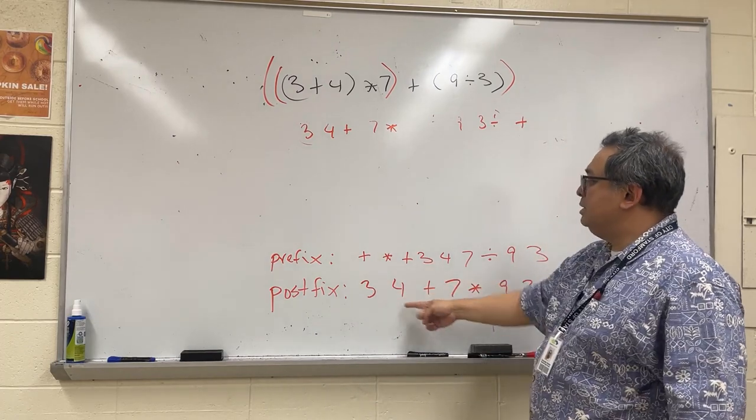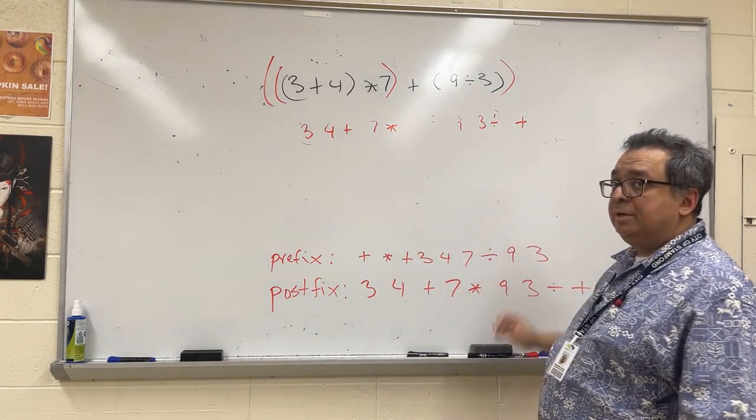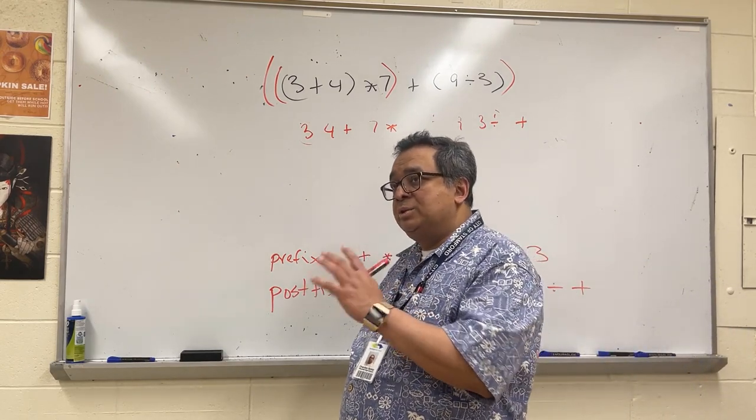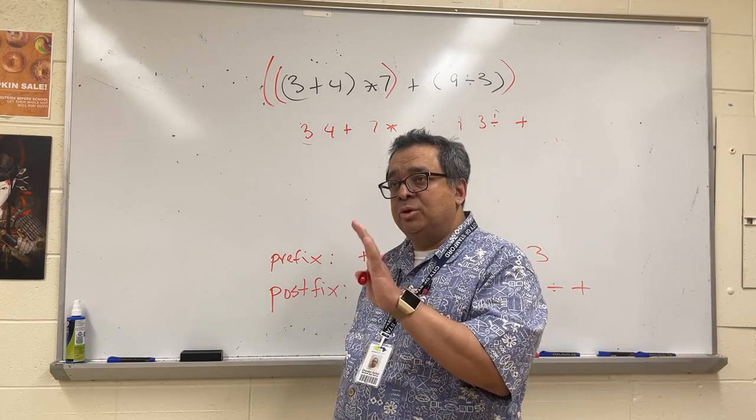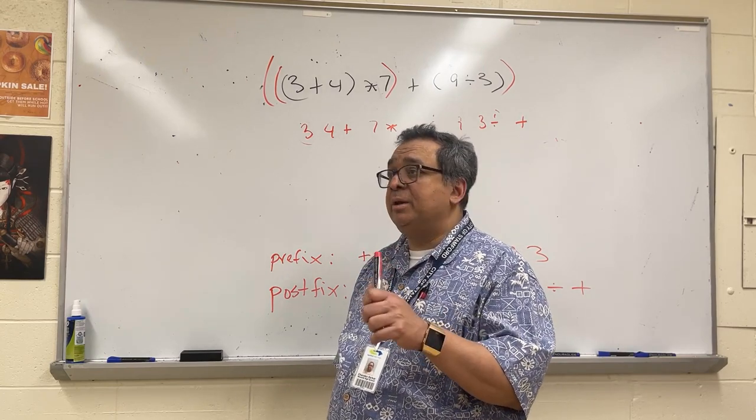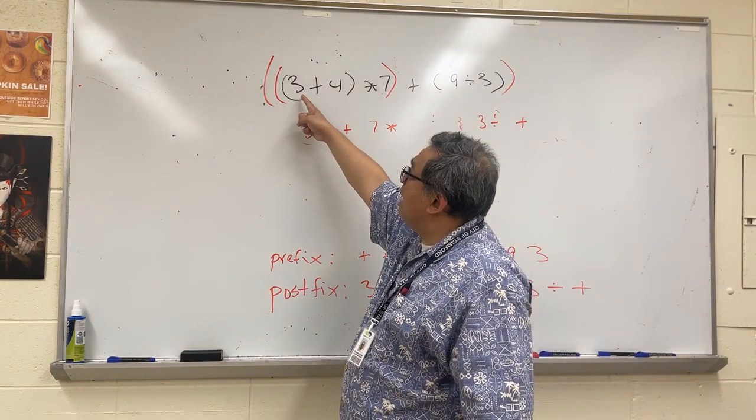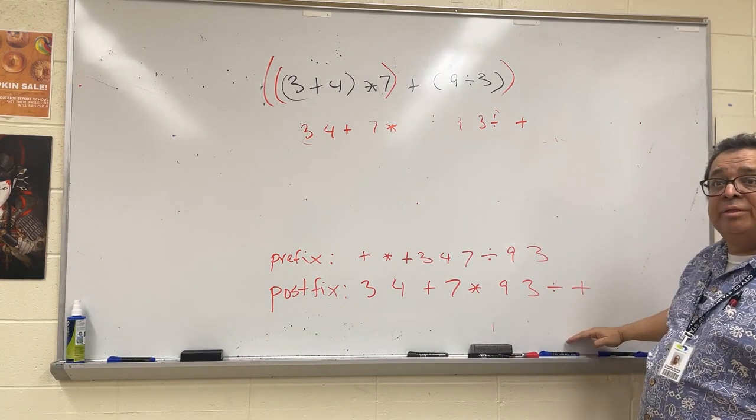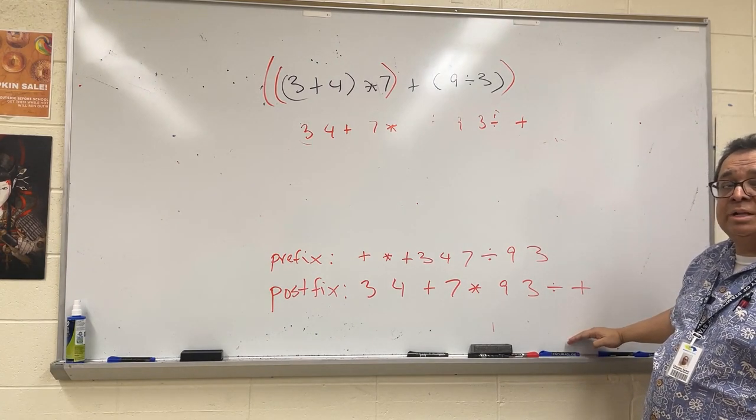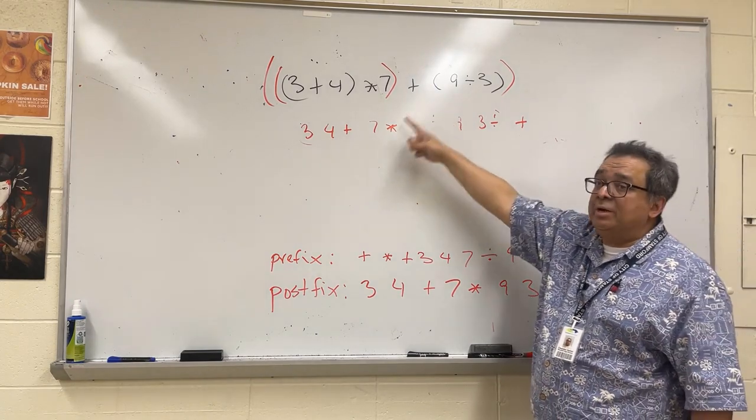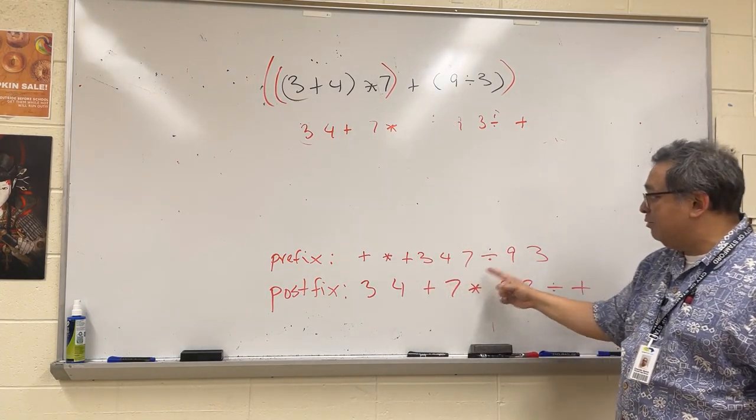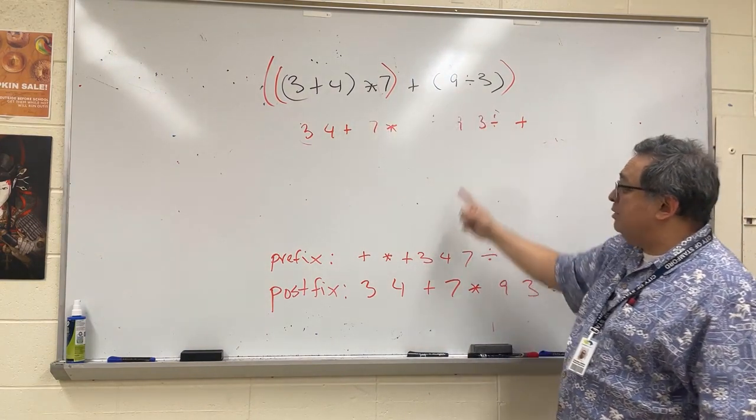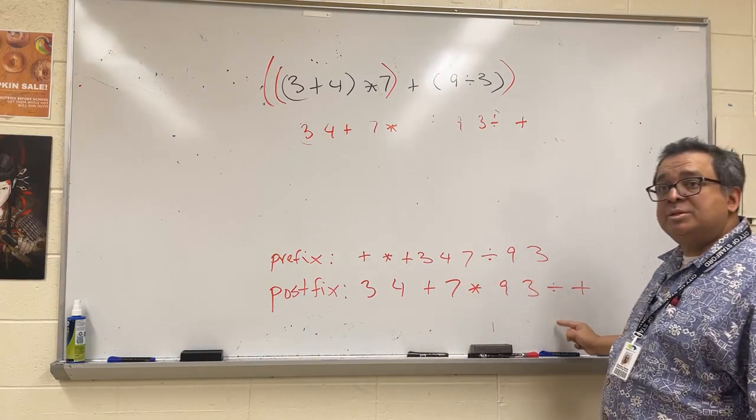And we should end up with this sequence here, over here. I want you to notice something, and this is an important insight for when I quiz you on this. There's an easy check to see—it won't show you if you got it completely correct—but you notice that the operands, the operands 3, 4, 7, 9, 3, are in the same order in all three. Do you see that? So the operands do not swap order. Only the operators move around. The operands stay in the same relative positions. So 3 is always first, then 4, 7, 9, and 3. So you can see they stay in the same positions.